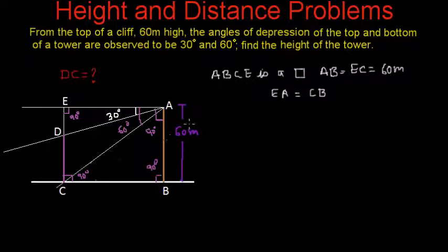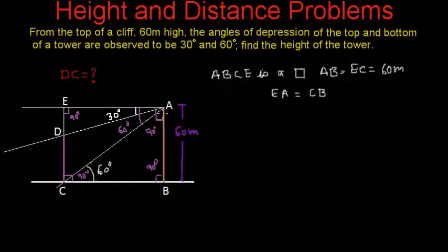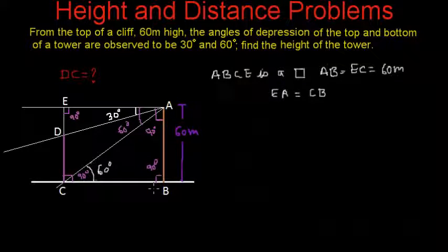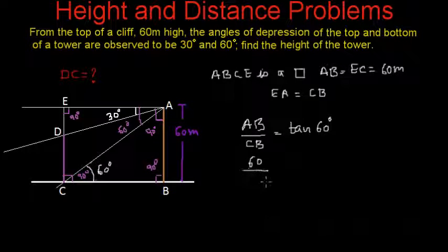If we look at triangle ABC, it is a right-angle triangle where the angle will be equal to 60 degrees. Because angle EAC is 60 degrees and ABCE is a rectangle, EA is parallel to CB. We know that if there is a transversal line between two parallel lines, the alternate angles are equal. That means angle EAC equals angle ACB, and both are equal to 60 degrees. Since angle B is 90 degrees, triangle ABC is a right-angle triangle where AB divided by CB equals tan 60.